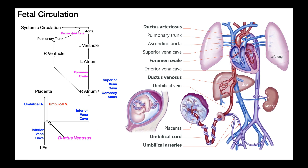The umbilical vein fuses with the inferior vena cava through a duct called the ductus venosus, and it really just continues on as the inferior vena cava going up. Before it fully fuses, it does give a little bit of blood that goes to the liver — the liver does need blood to survive, we just don't want a large amount going there. A branch coming off the umbilical vein fuses with the hepatic portal vein, allowing the liver to receive a small amount of blood.